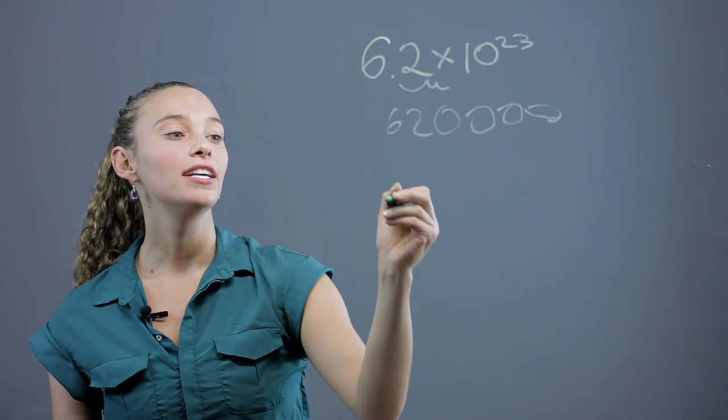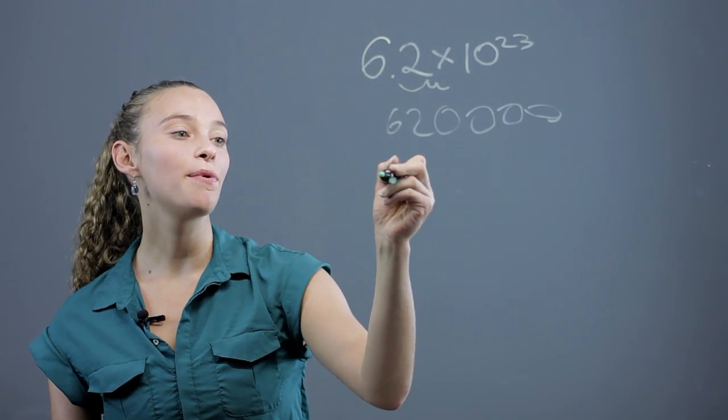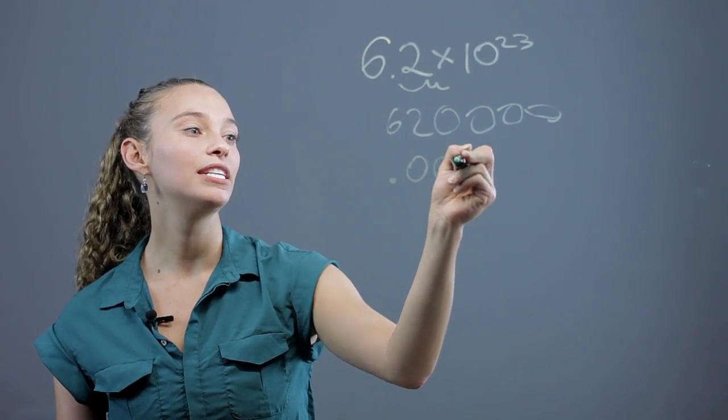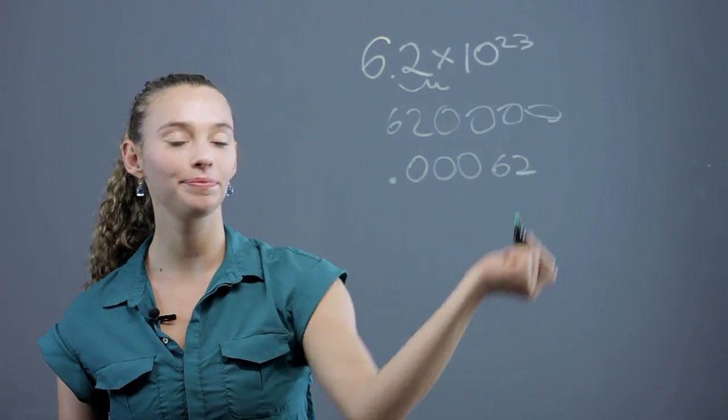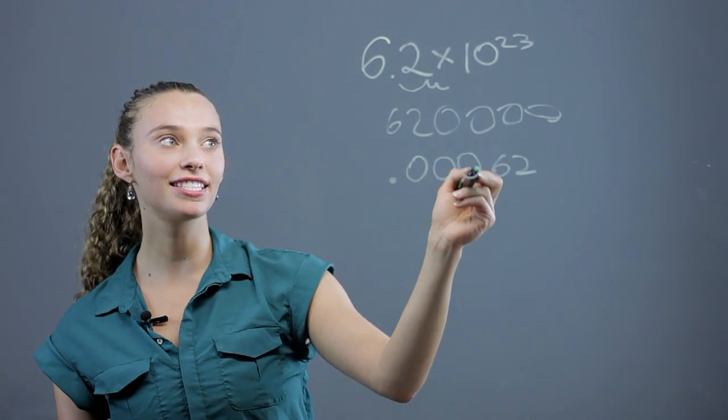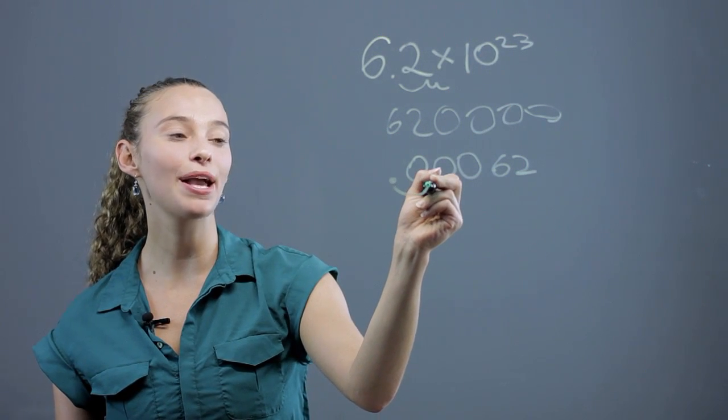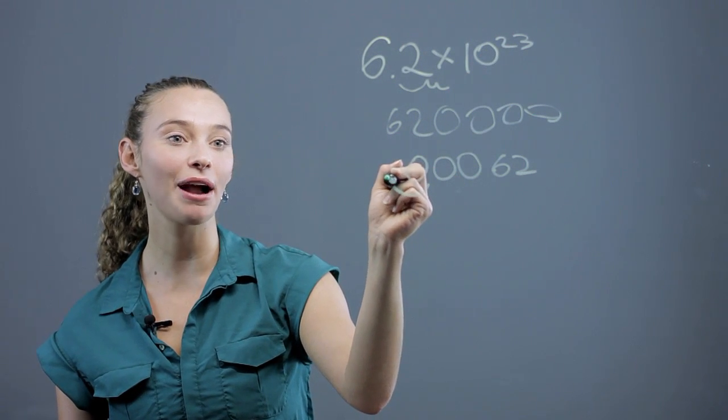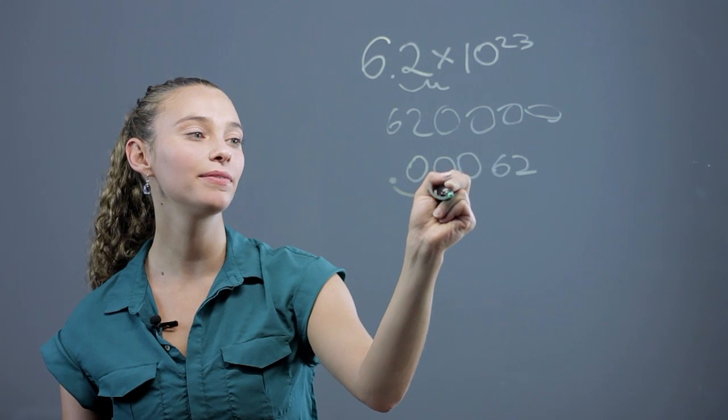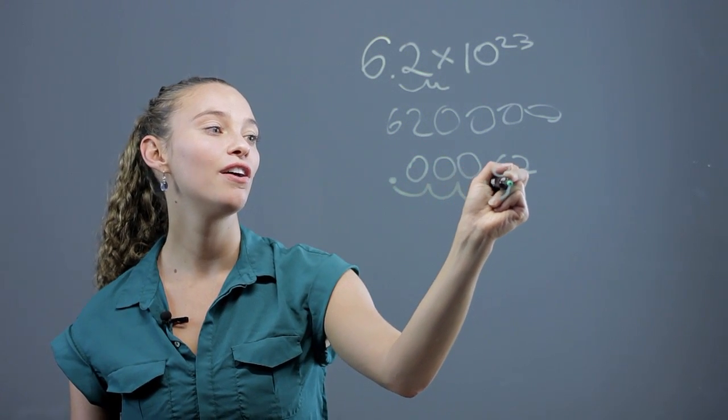You can also have a decimal like .00062 and if we want to write that in standard form, it's going to be to a negative exponent because we're bringing it over the opposite way. Let's count how many times we bring it over. We bring it over 1, 2, 3, 4.